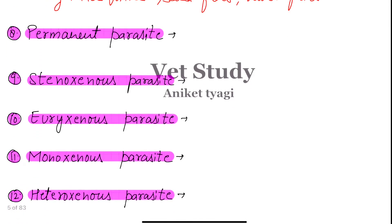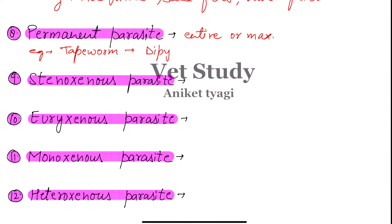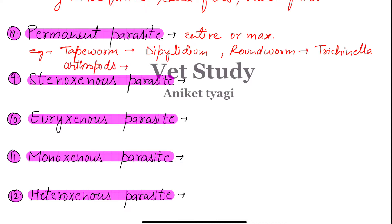Next we have the permanent parasite, just opposite to the temporary parasite. These permanent parasites basically live their entire or maximum life within the host. Examples include tapeworms such as Dipylidium, round worms such as Trichinella, and arthropods like Demodex. These are all examples of permanent parasites.